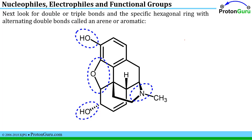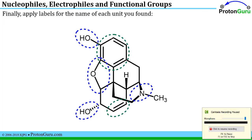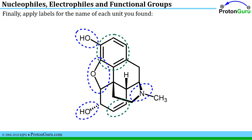Next, if you look for double or triple bonds and try to identify specifically any hexagonal arrangements where you have alternating double bonds and single bonds around the ring, those are a specific type of functional group called an arene or an aromatic. So now I've circled those.